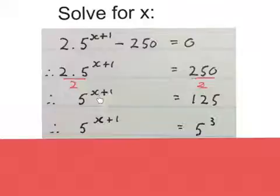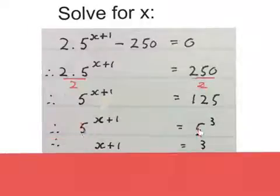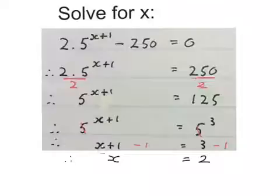Then I keep this side, and I prime factorize this, it becomes 5 to the power of 3. Now the bases are the same. So I drop the bases, I get x plus 1 equals to 3. Then to get the x alone, you minus 1 on both sides, you get x equals to 2. That's the final answer. We solved for x.